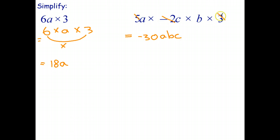So that expression there can be written in simplified form is negative 30 abc. And notice again, we don't have to have like terms in order to multiply.